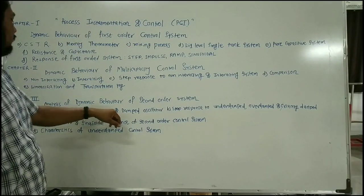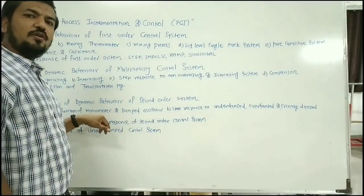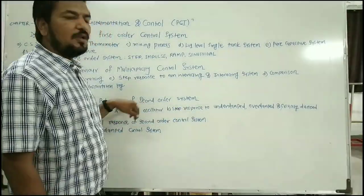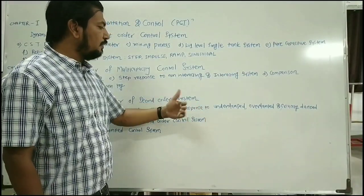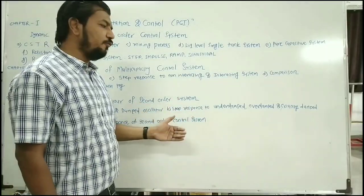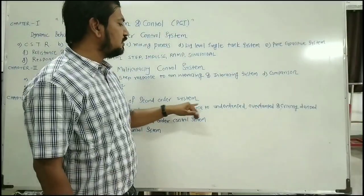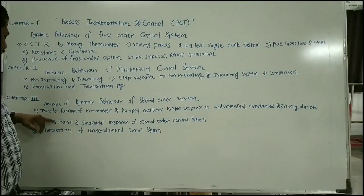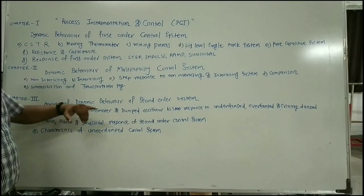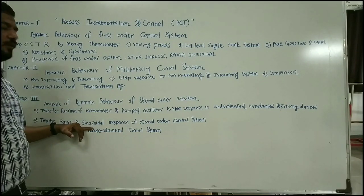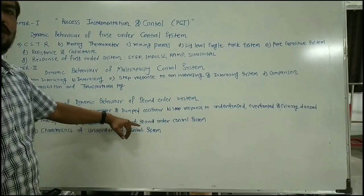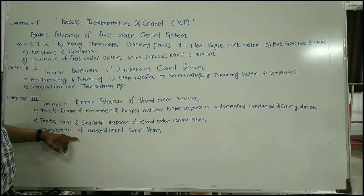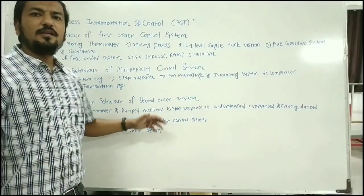Once you have determined the transfer function of both second order systems — the manometer and the damped oscillator — you again provide the same forcing functions to the second order system. Remember, three types of second order system responses are possible depending on the value of the damping coefficient: under-damped, over-damped, and critically damped. You then apply impulse, ramp, and sinusoidal forcing functions and study the response. Additionally, characteristics of the under-damped control system are covered.